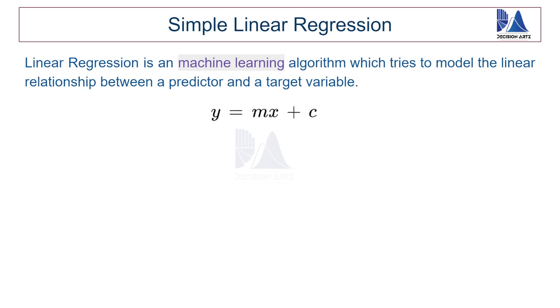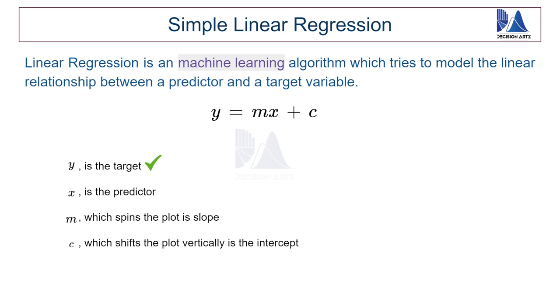So now that we know the line equation and the four important components that make up the line equation, it's high time we expand our definition. Out of these four variables, y which is the target is known, x which is the predictor is also known, whereas m and c both are unknowns. Thus, the main objective of linear regression algorithm is to find the slope and the intercept. And that is what we need to add to the definition. And that leads us to the next set of explanations.